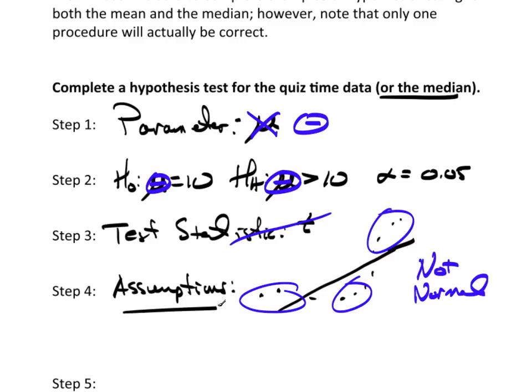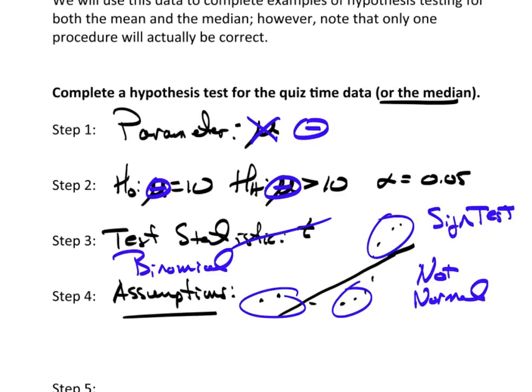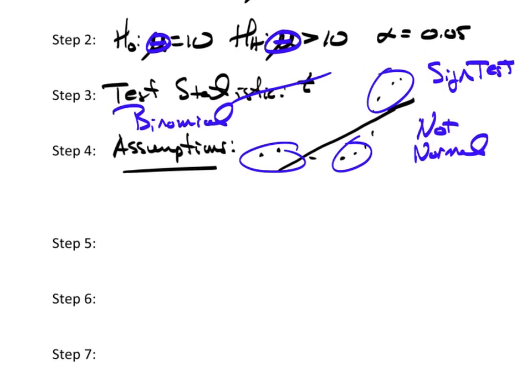We'll be using something different. This is based on the binomial. The way we do a hypothesis test for the median is based on the binomial. And what we're going to use is a procedure called the sign test.